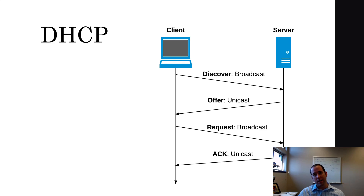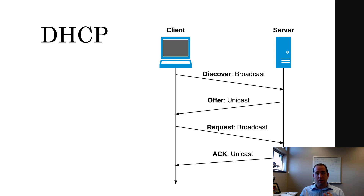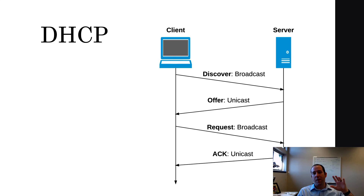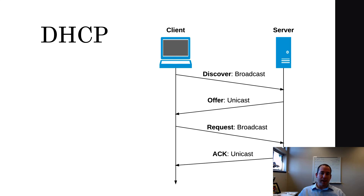The server knows who you are and knows what you need, so it responds with a unicast DHCP Offer sent back to you. It says: "Hey, I know who you are. Here's the network information that you might want." When you receive that offer, the client turns around and sends a Request back to the server — basically sending the same list back saying "here's the list of configuration parameters that I want" — and it broadcasts that out again. Then finally, you receive an acknowledgement, an ACK, back from the server. An ACK means: okay, you are now that IP address.